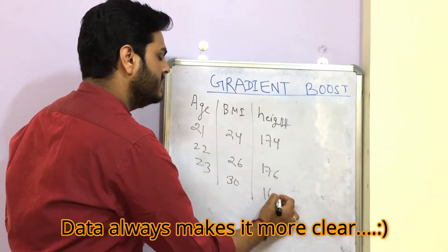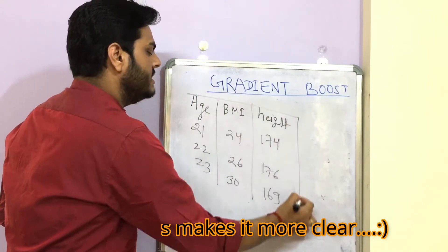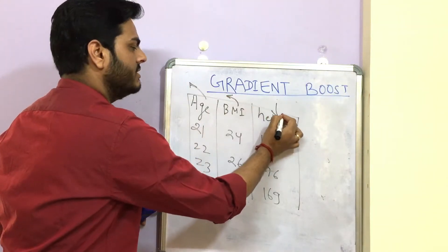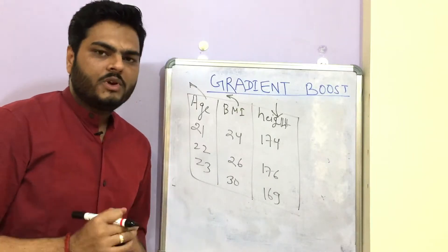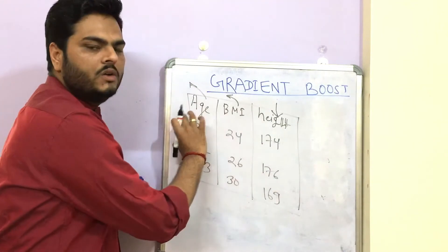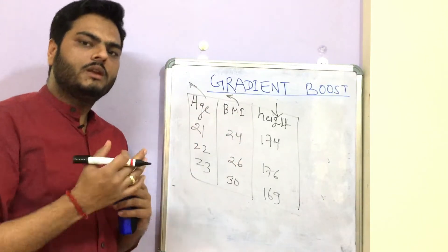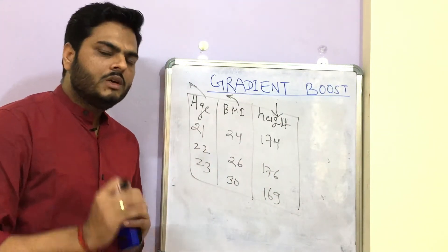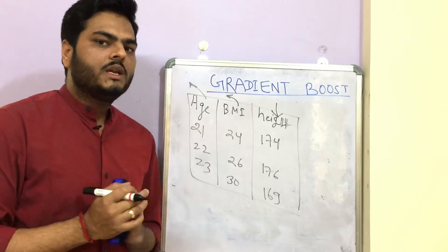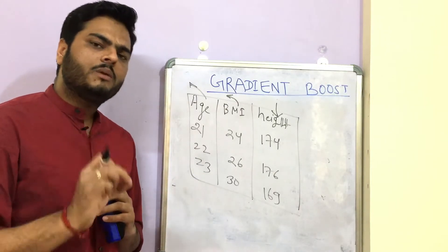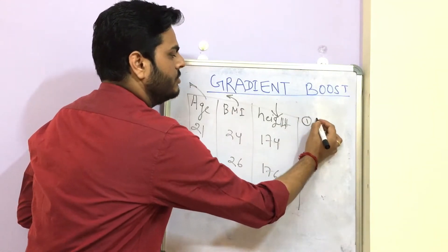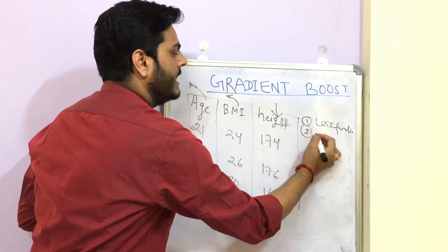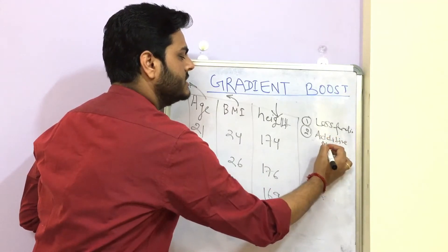Height might be 174, 176, 169. Age and BMI are the independent variables and height is the target variable, making this a regression problem. We want to learn how height is dependent on age and BMI. The boosting algorithm needs two fundamental things: one is a loss function, and another is an additive model.